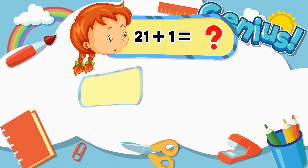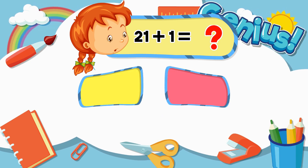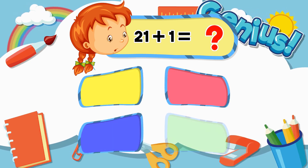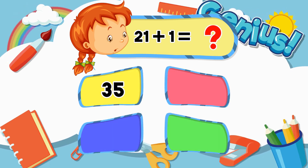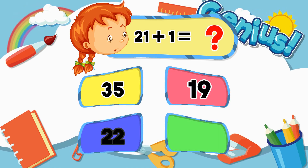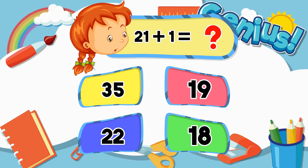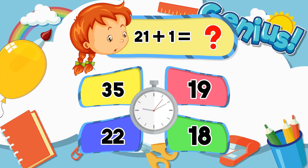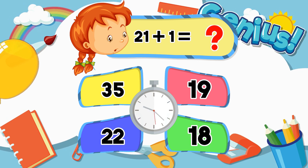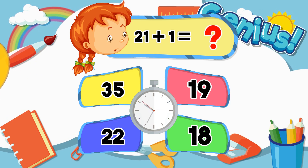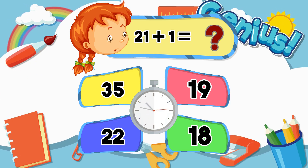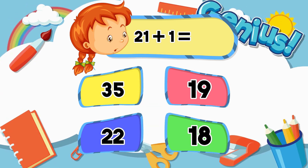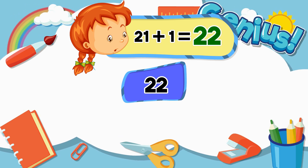What is 21 plus 1? 35. 19. 22. 18. Correct answer: 22.